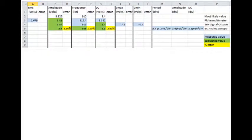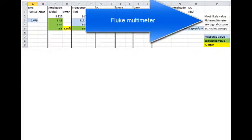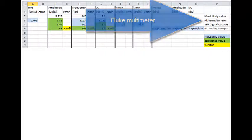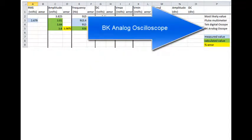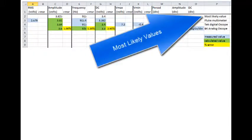Here is a summary of all of those measurements. The Fluke multimeter is in the second row, the digital oscilloscope is in the third row, analog oscilloscope in the fourth row, and the most likely values in the top row.